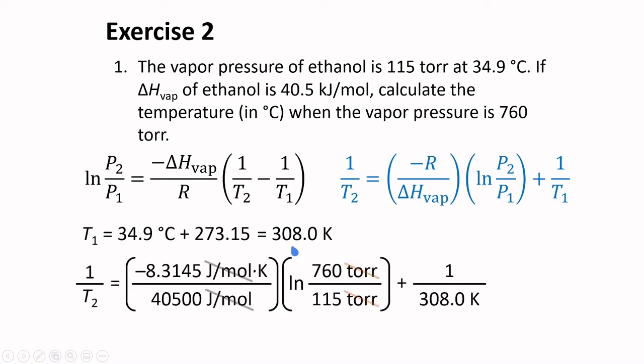Just need to plug in all the values, cancel all the units, and we will get 0.002859 per Kelvin. Taking the inverse of this relation, 349.8 Kelvin is obtained. This is equivalent to 76.6 degrees Celsius.